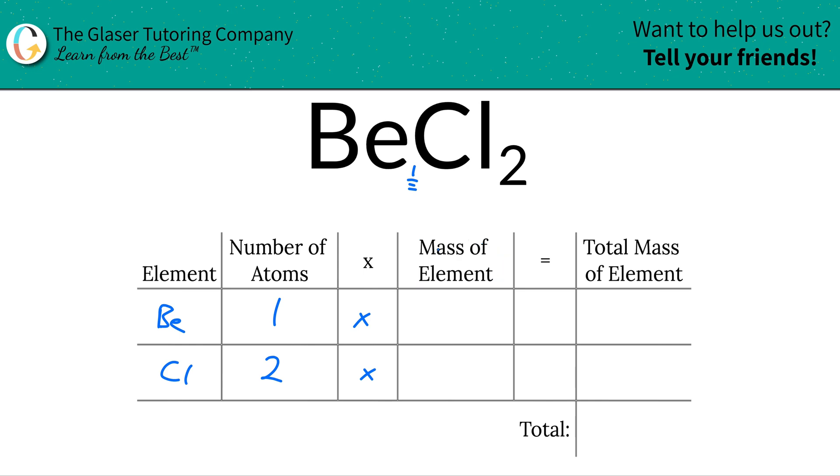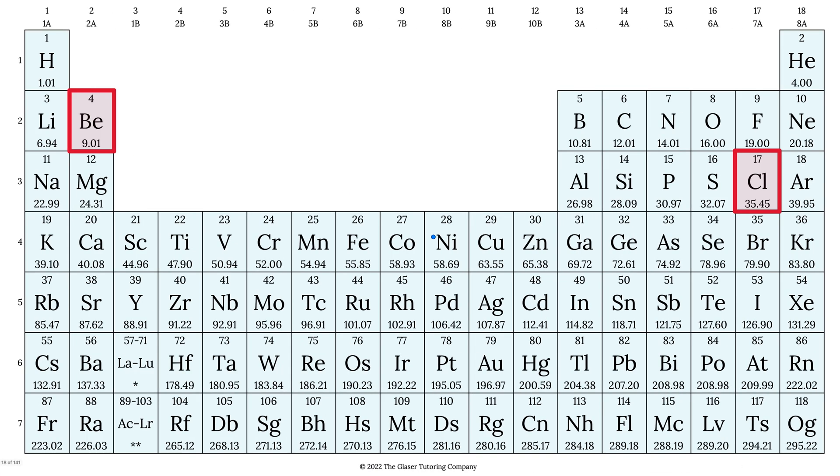Then we're going to multiply it by the mass of each element. And that's where we use our periodic table, so let's check it out. So beryllium here is about 9.01 and chlorine here is about 35.45.